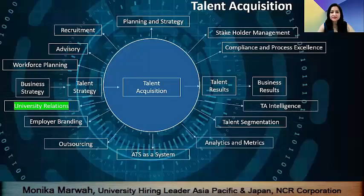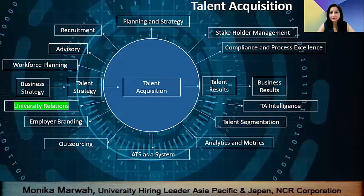Before we get into that, let's see talent acquisition as a group itself. The entire talent acquisition is evolving. We have business strategies and talent strategies resulting in talent businesses altogether. That is why we have proper planning and strategies — stakeholder management, compliances, recruitment, advisory, analytics, ATS, outsourcing. But the important thing is employer branding. And one of the core components out of the talent acquisition group is university relations, which is what I'm here to touch base upon.